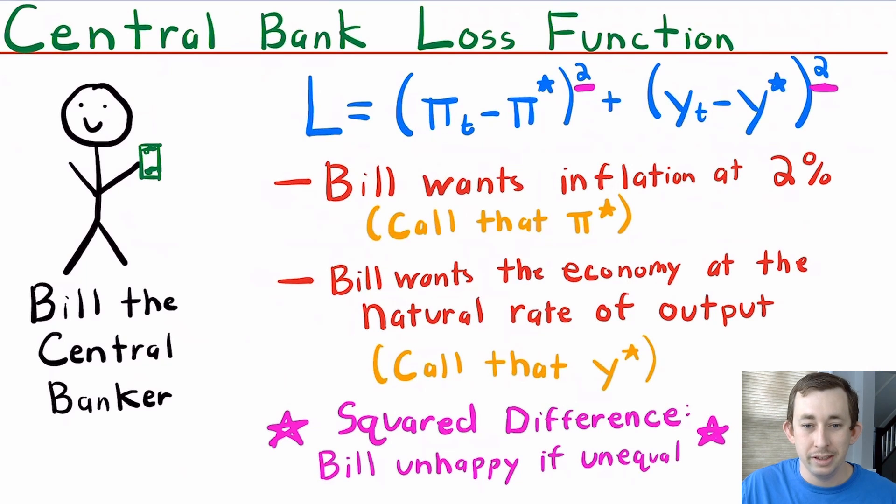This loss function is going to be the squared difference between the inflation and some inflation star, or the inflation target of the central bank, and the squared difference between the output gap and the ideal or targeted output gap, whatever Bill wants to do.